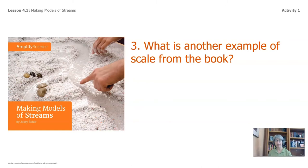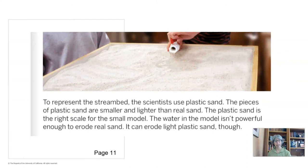What is another example of scale from the book? Some of you chose page 11. To represent the stream bed, scientists use plastic sand. The pieces of plastic sand are smaller and lighter than real sand. The plastic sand is the right scale for the small model. The water in the model isn't powerful enough to erode real sand, but it can erode light plastic sand. So here we're trying to recreate the action of a stream by using water that flows lightly and sand that's plastic.